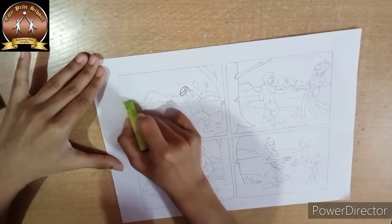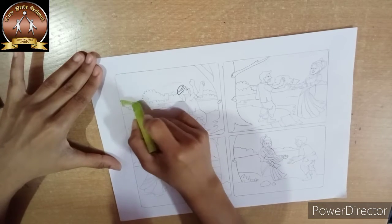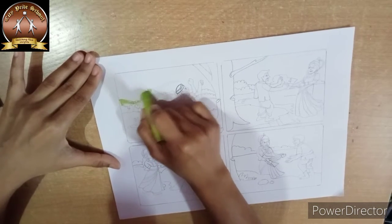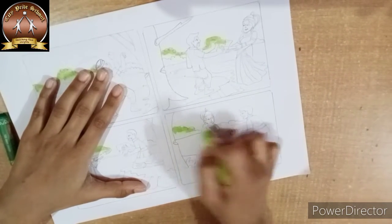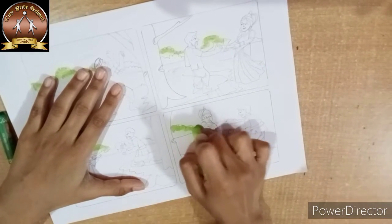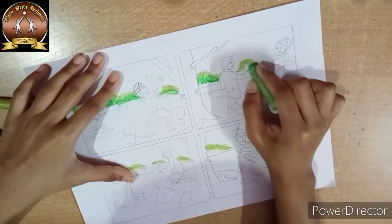So first we will start coloring the grass. For coloring grass I am using all three shades of the green: light, medium, and dark. So in every block we have to color. Now I am using middle tone of green.